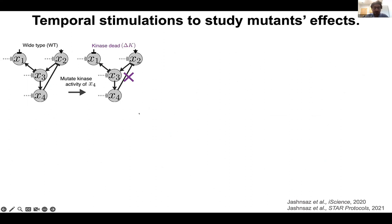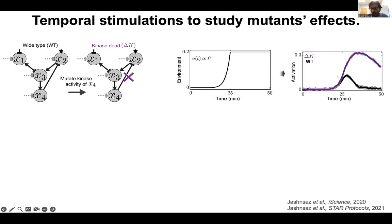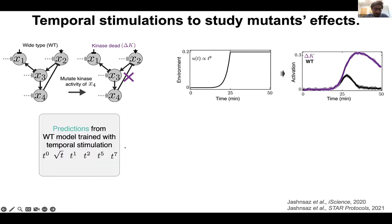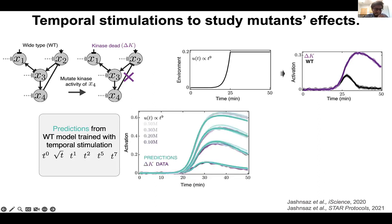We also examined mutant conditions. When we eliminate the feedback from the model, as expected from the literature, the model without feedback results in a stronger HOG-1 activity. We then used the wild-type model trained on diverse temporal stimulation data to predict these mutant responses. The test data sets are for conditions when this feedback has been removed.